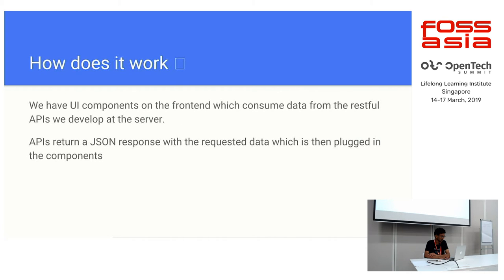The UI components that live on the front end consume data from the RESTful APIs exposed on the back end. The API returns a standard JSON response with the requested data, and this data is plugged into the components. For example, this URL is a sample API call to the server. If you just visit this URL, you will get a JSON response. This JSON response has a key called skill rating, and then it has a key called stars with all of the stars distributed — 1 star, 2 star, 3 star. This is for getting metadata for any skill, including the skill rating. This is how we fetch data from the server and use it in the front end to fill into the components.